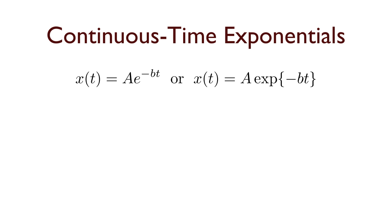A continuous time exponential takes the form of x(t) equals A e raised to the negative bt power. Sometimes we can write that in longhand using the exp notation instead of just the exponential. The shape of the signal depends on the value of b. If b is greater than zero, we end up having a signal that decays with time. And actually, the rate of decay depends on how big b is.